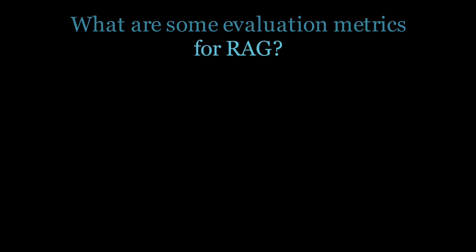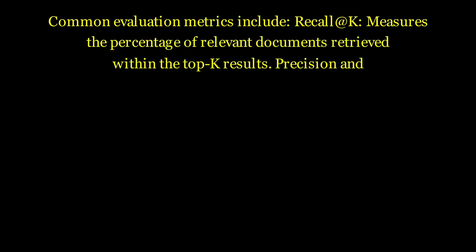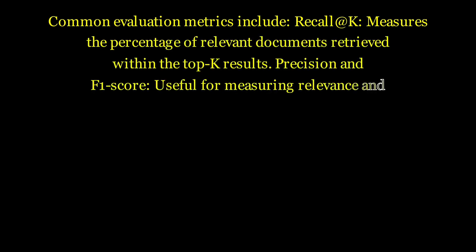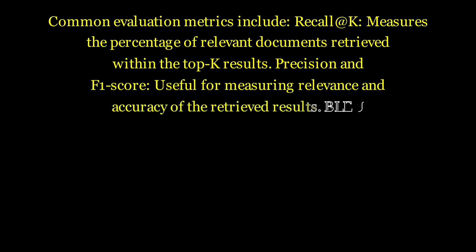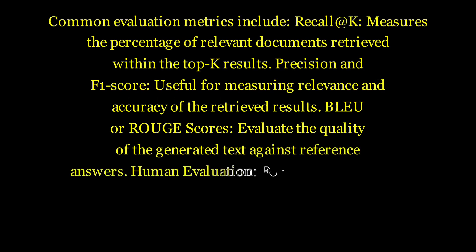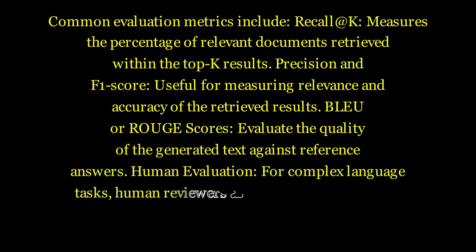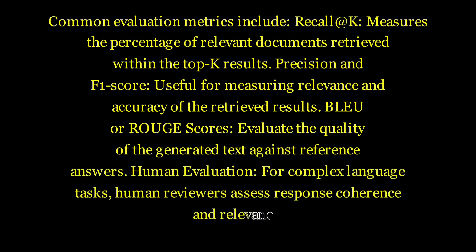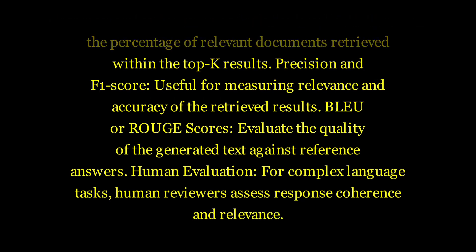What are some evaluation metrics for RAG? Common evaluation metrics include Recall@K, which measures the percentage of relevant documents retrieved within the top K results; Precision and F1 score, useful for measuring relevance and accuracy of retrieved results; BLEU or ROUGE scores, which evaluate quality of the generated text against reference answers; and human evaluation for complex language tasks, where human raters assess response coherence and relevance.